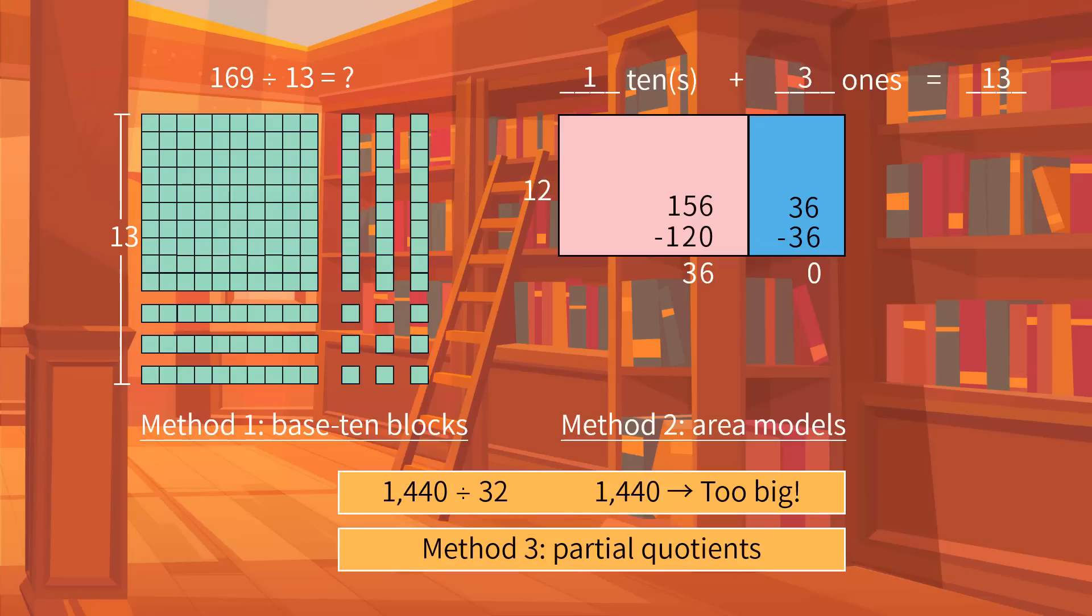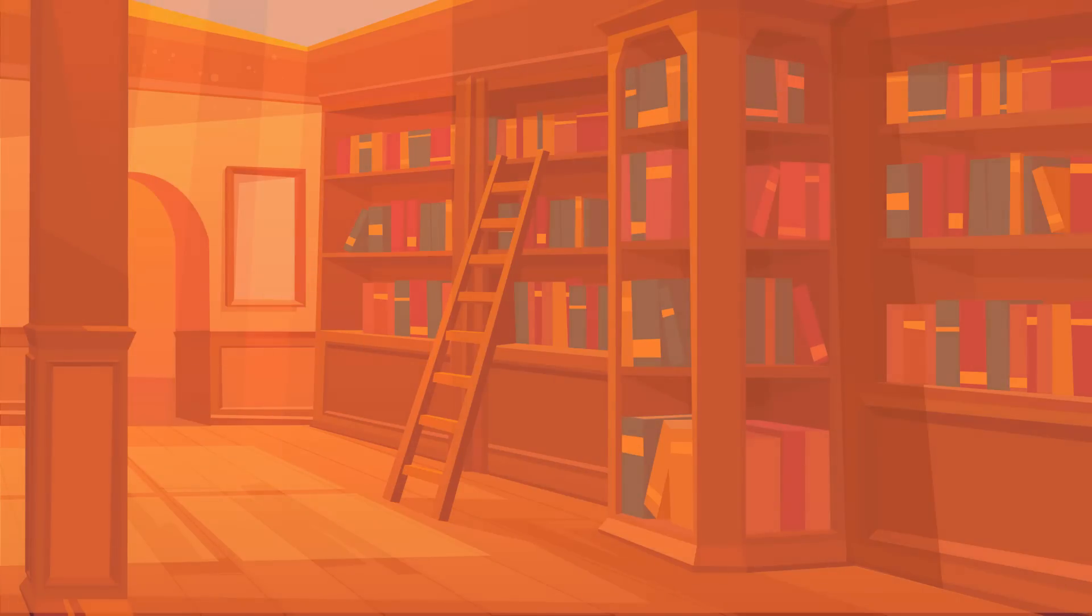The logic of the partial quotients method is simply subtracting the divisor from the dividend until the remaining number is less than the divisor. Generally, we often subtract the product of 10 and the divisor.